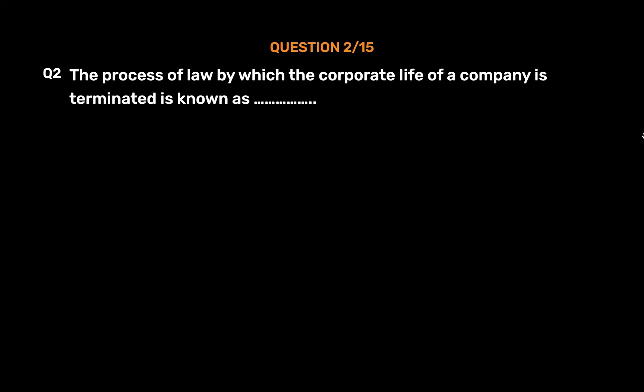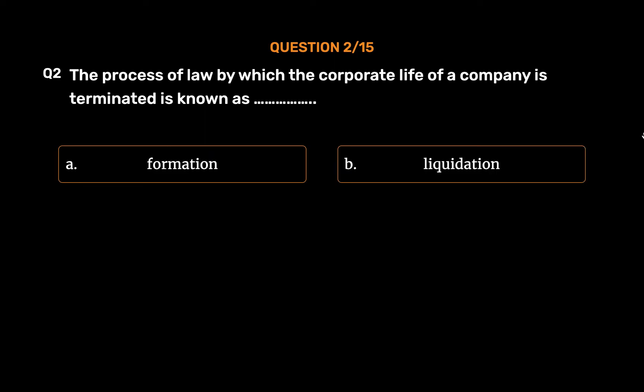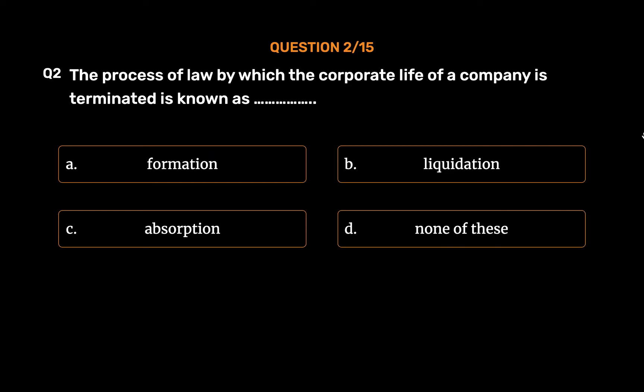Question number 2. The process of law by which the corporate life of a company is terminated is known as — Option A: Formation. Option B: Liquidation. Option C: Absorption. Option D: None of these. The correct answer is Option B — Liquidation.